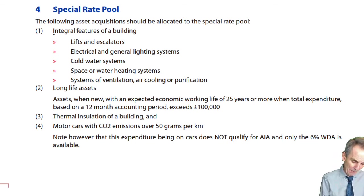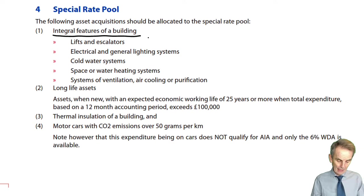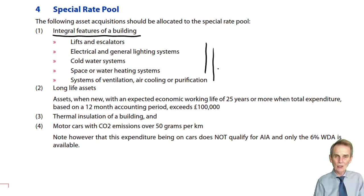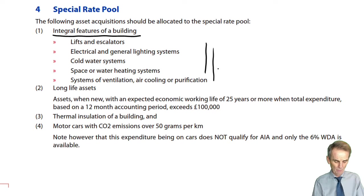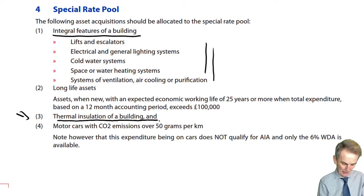We had the one already mentioned when we first introduced the idea of special rate pool expenditure: integral features of a building, with examples listed there — some pretty major items in terms of the level of expenditure involved. Another one akin to that is the thermal insulation of a building as well.